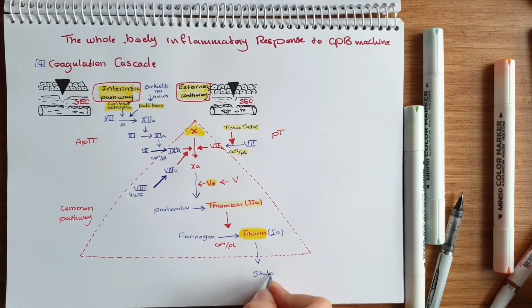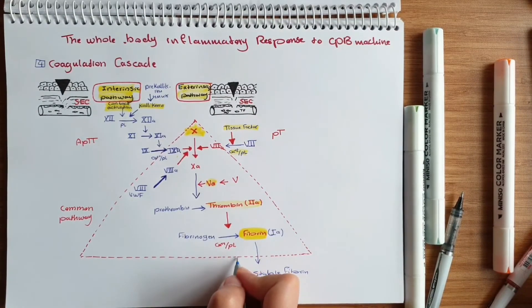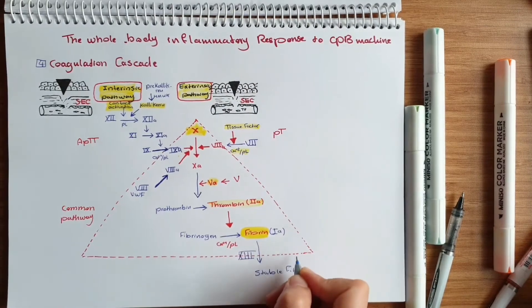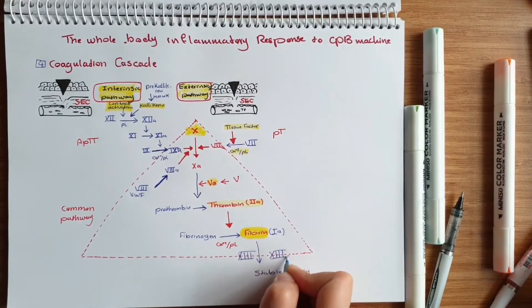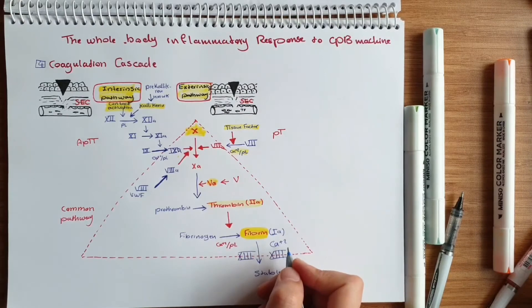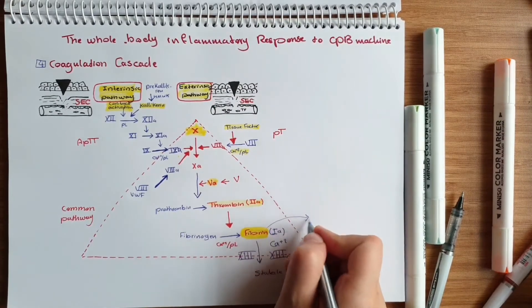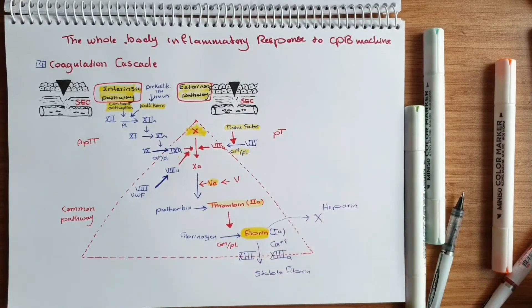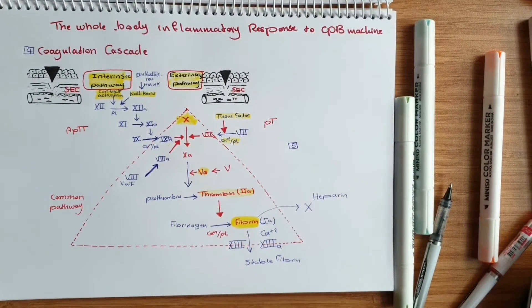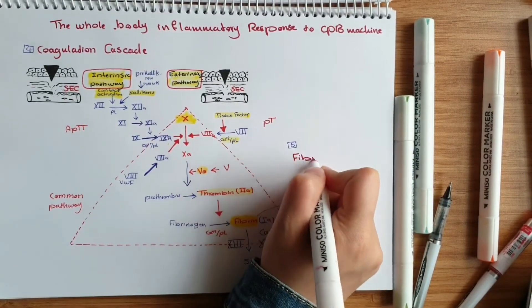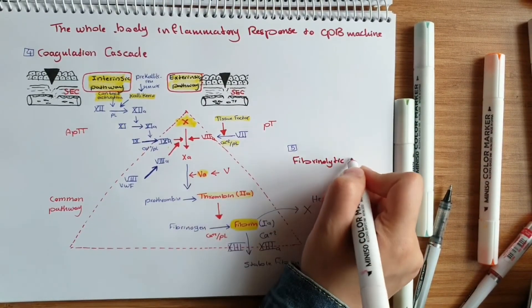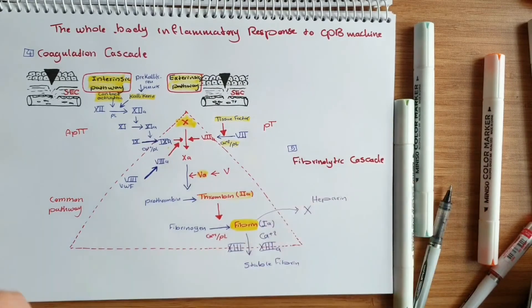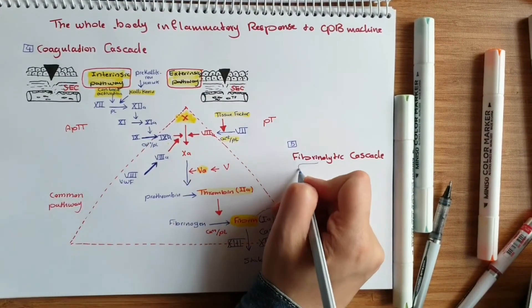Fibrin needs to be in its stable form, which is achieved with the help of calcium and factor 13. During the cardiopulmonary bypass machine, fibrin formation is inhibited by administration of heparin, preventing fibrin formation. However, this process is not completely inhibited, so some fibrin will still be formed.